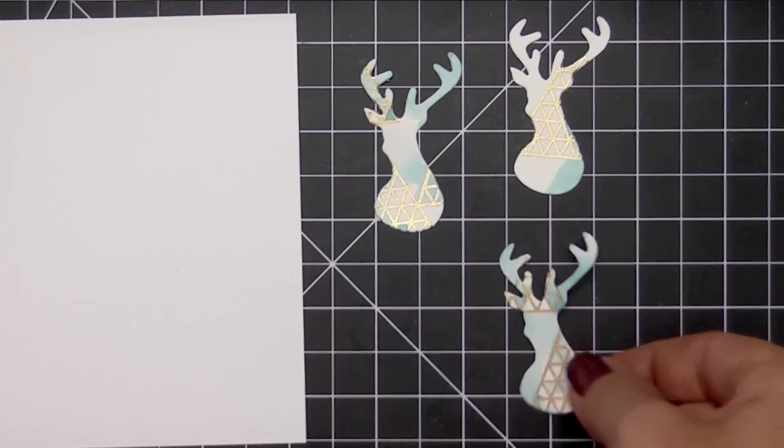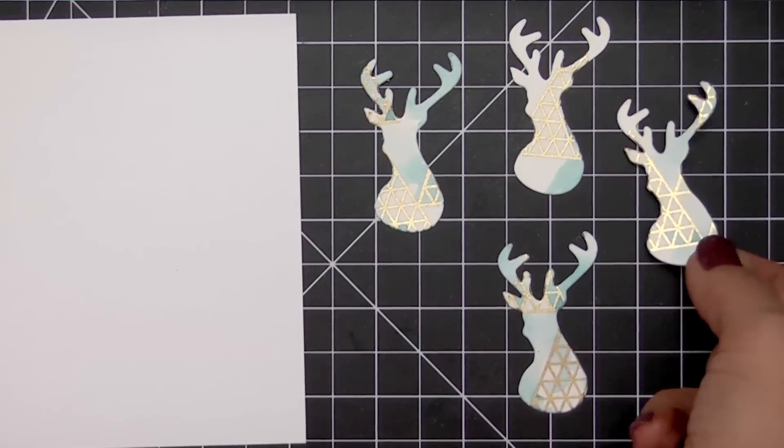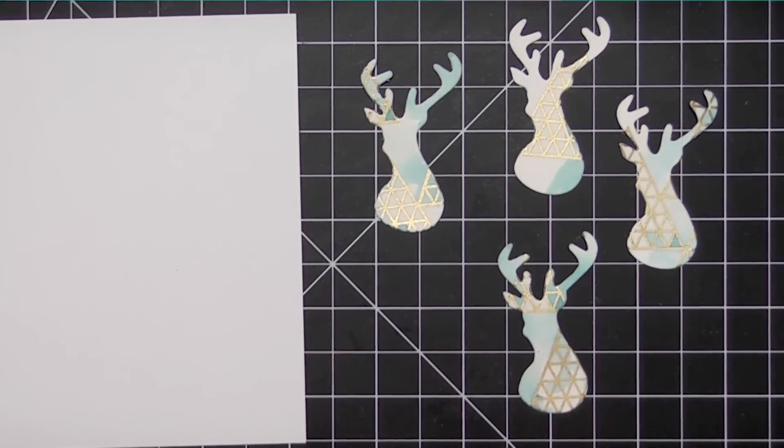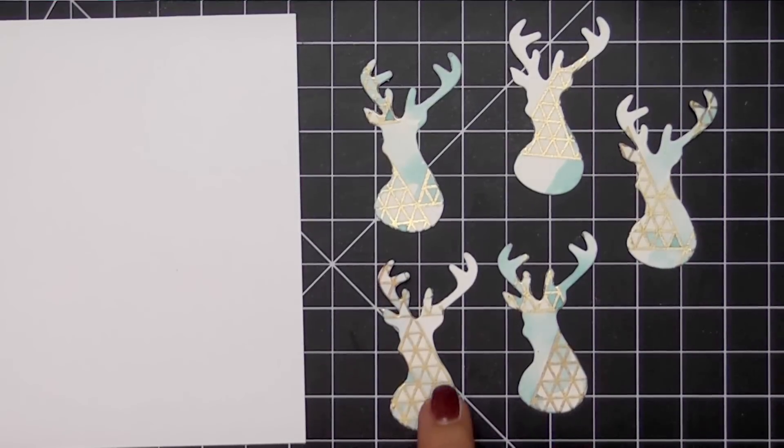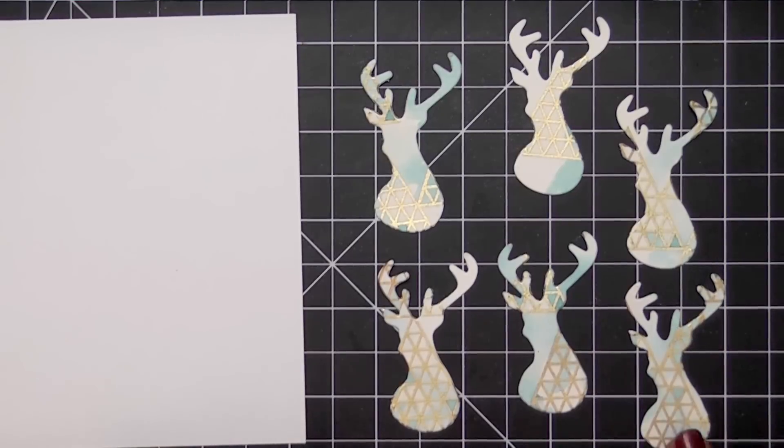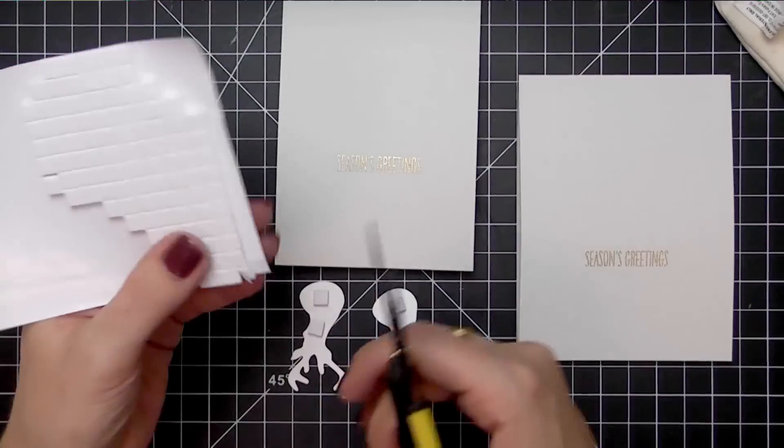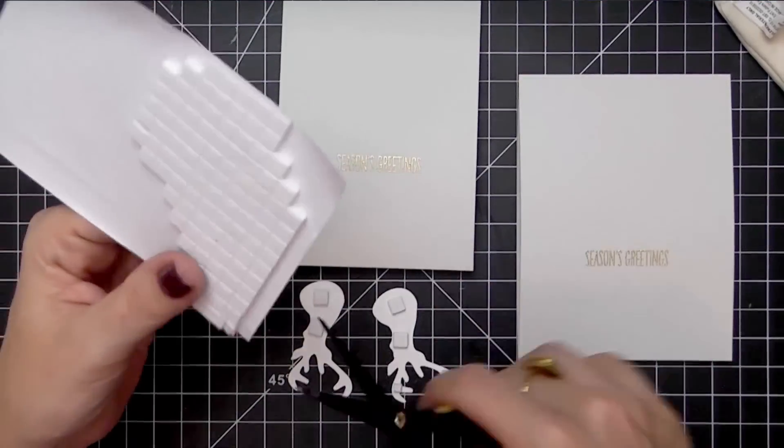Just keep running that die back and forth through your die cut machine until you've cut as many of these stag heads as you can from that watercolor panel. You should end up with several of these heads that are all the same but slightly different.